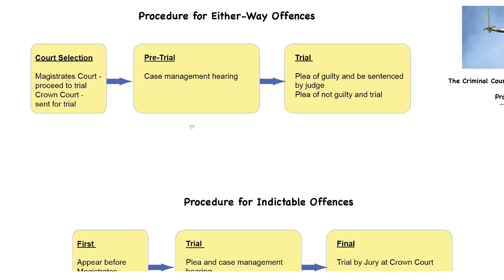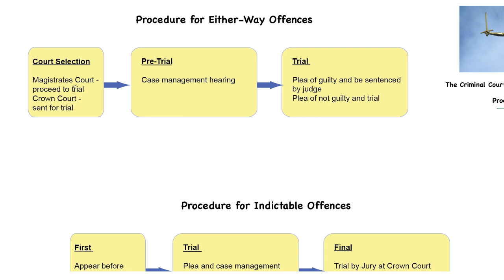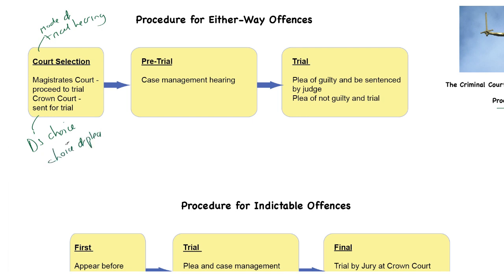Either-way offenses are slightly more complex. Generally we start with court selection - the first hearing is always going to be in the magistrates' court, and the magistrates' court will decide in a mode of trial hearing whether the case will be heard in the magistrates' court or in the crown court. At this hearing both sets of lawyers make cases as to where they want the trial. Generally it is the defendant's choice on an either-way offense where they want to be heard, and the magistrates' clerk and lawyers will explain to the defendant the choice of plea.